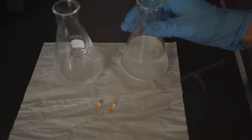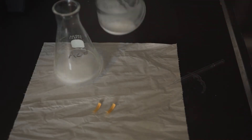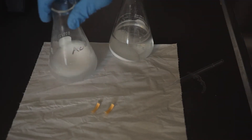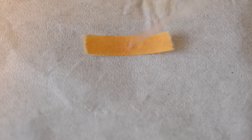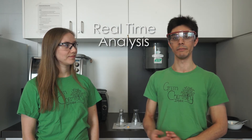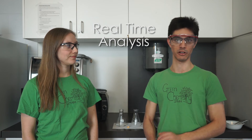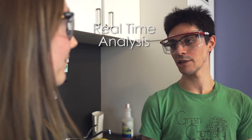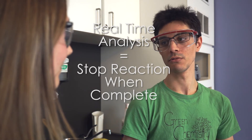To neutralize this acidic solution, we're going to slowly add a base — in this case, a dilute solution of sodium bicarbonate in water. As we add small amounts of base, we use the pH paper to check whether the mixture is acidic, neutral, or basic. The pH paper provides analytical feedback in real time on how far along we are in the reaction. We may need to continue adding more base depending on what color the pH paper shows. When the pH paper shows that the reaction is neutral, we can stop the reaction.